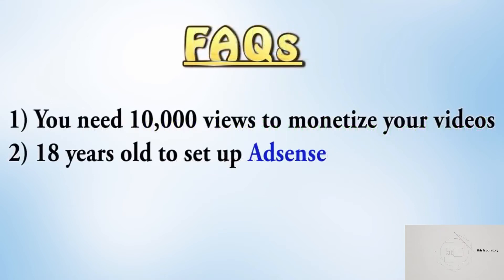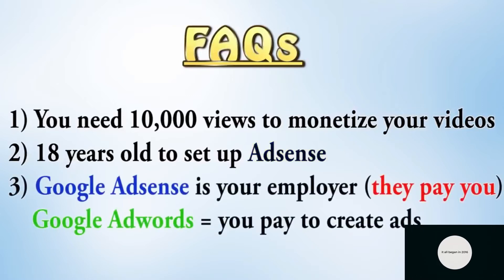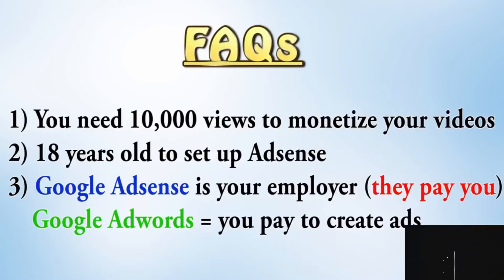Number two, yes, you need to be 18 years and older to set up an AdSense account. So if you're under 18 years old, then get a guardian, friend, or relative to help you set up AdSense. Sometimes people ask, is Google taking money from me or are they paying you? Google AdSense pays you money for content that you post on your YouTube channel and on your blogs. Whereas Google AdWords, this is where you pay Google in order to create ads to display on other people's websites or YouTube.